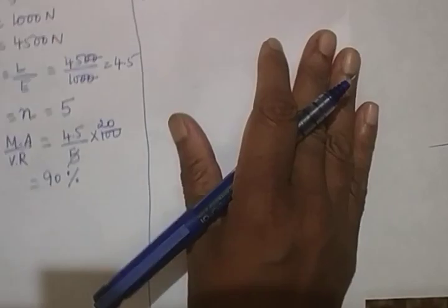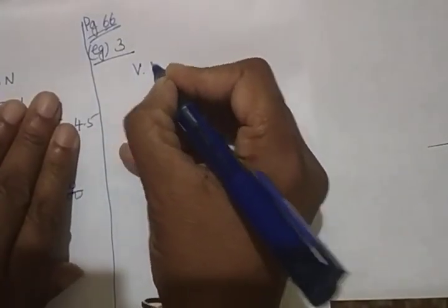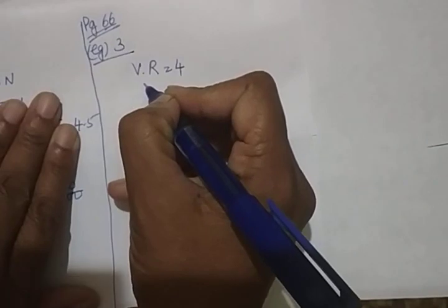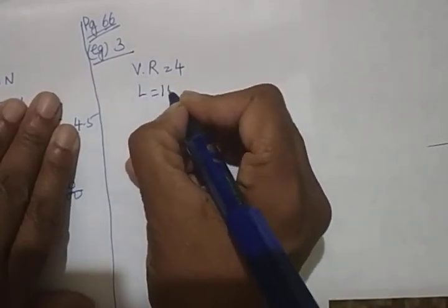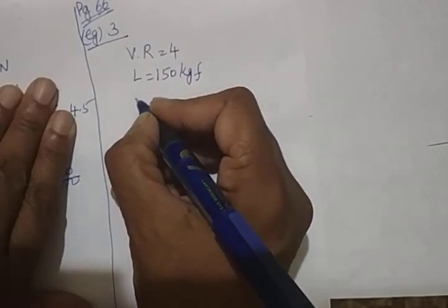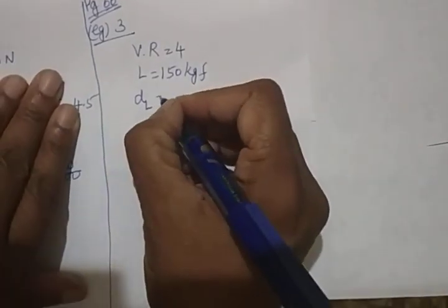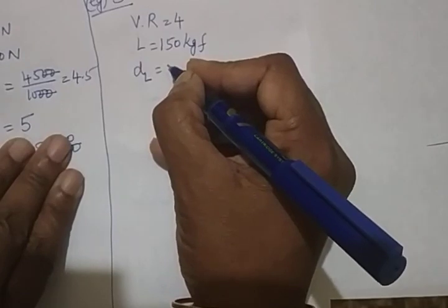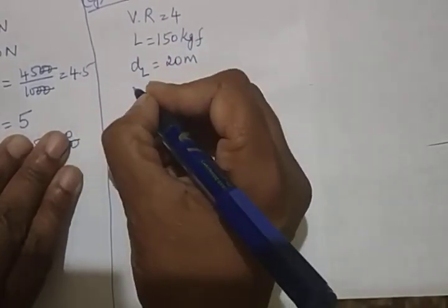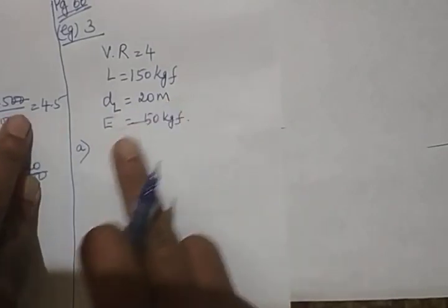Let's write what is given. First, velocity ratio is given as 4. Then load 150 kgf. And then vertical height. Load comes through vertical height. So distance traveled by load, DL, you will write DL. As I told you before, there is no effort arm, load arm in pulley system. So DL will be 20 meter. Effort required is 50 kgf in the downward direction. These are the informations given: velocity ratio, load, effort and distance traveled by load.